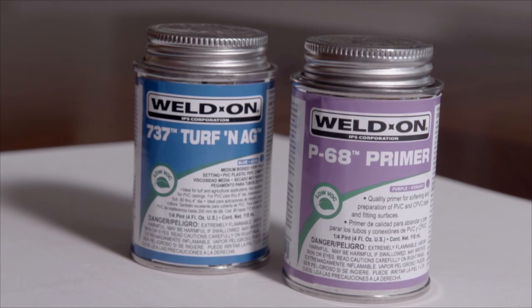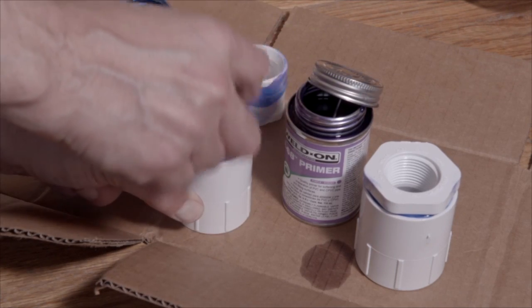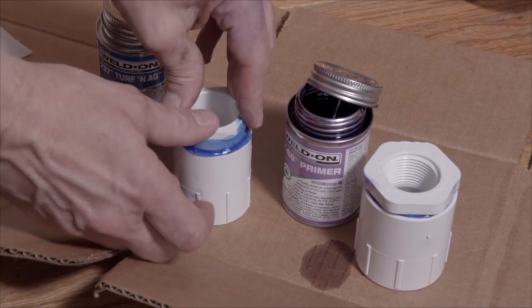When gluing together PVC, I recommend using a primer before you glue. Primer cleans and softens the pipe before you apply the glue. Once you use primer and glue, the fitting becomes permanent.